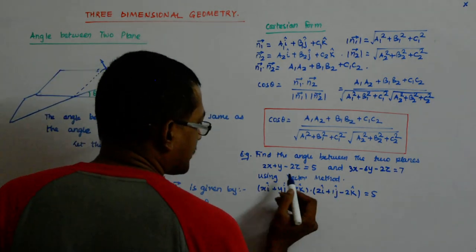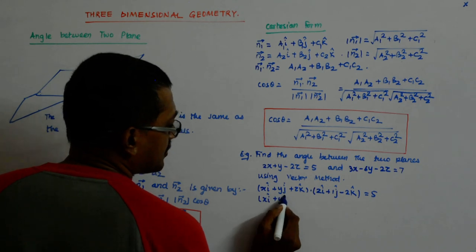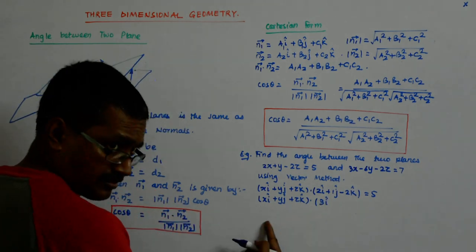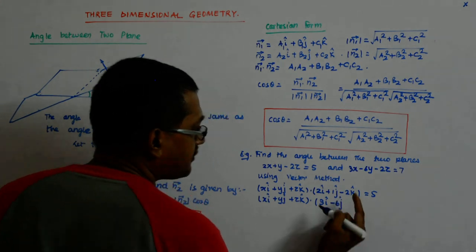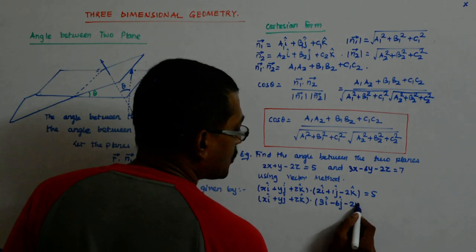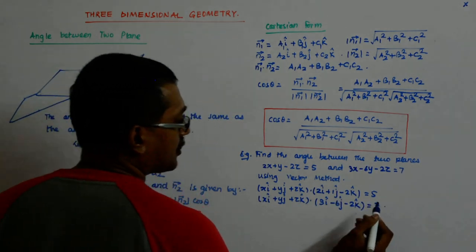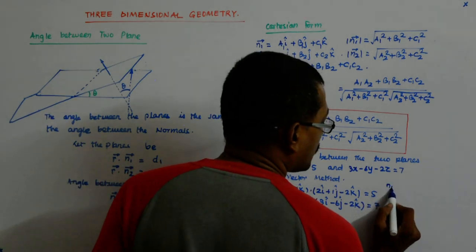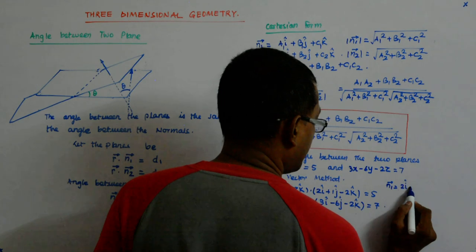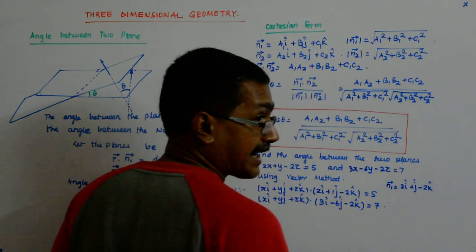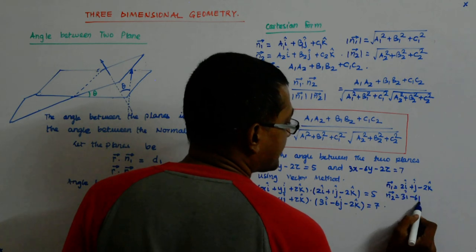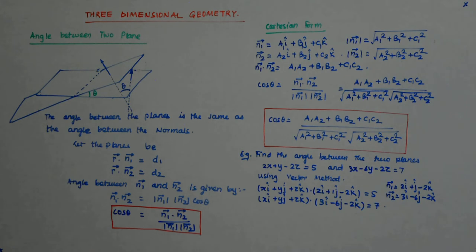So my n1 becomes this. Similarly from the second equation, again I do the same thing. Dot 3i cap, so that this will become the product of these. Minus 6j cap, so it becomes minus 6y. Minus 2k cap, so it becomes minus 2z is equal to 7. So from these I immediately get my n1 vector as 2i cap plus j cap minus 2k cap, and the n2 vector as 3i cap minus 6j cap minus 2k cap. Immediately you can apply the angle formula.